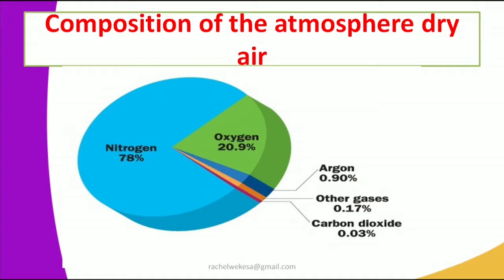All these gases in the atmosphere are very useful. For example, nitrogen is mostly useful in the formation of plants. Oxygen is mostly used by human beings and animals. Argon is used for lighting bulbs. Carbon dioxide is used for photosynthesis. Progressively, we will look at the uses of each gas in the atmosphere.